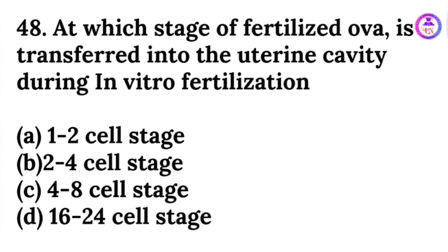At which stage is the fertilized ovum transferred into the uterine cavity during in vitro fertilization? It is the 4 to 8 cell stage.